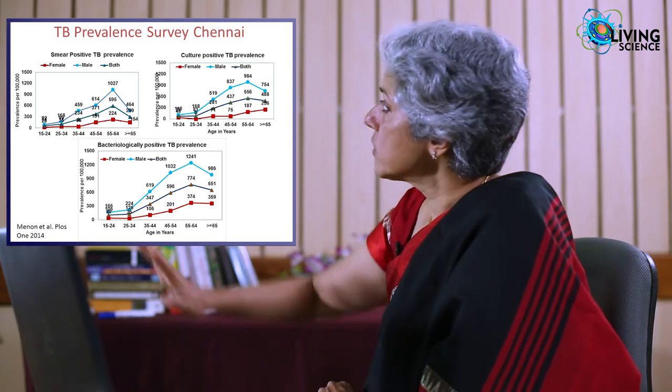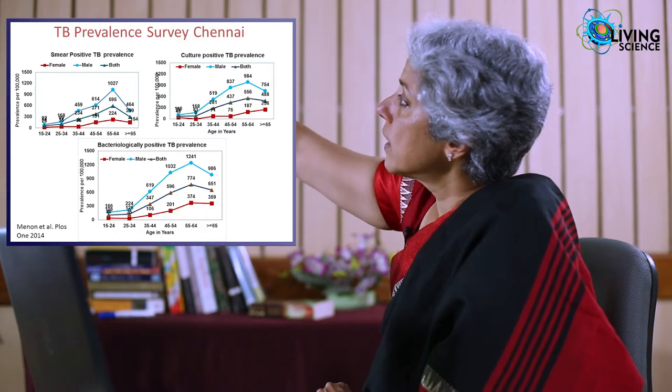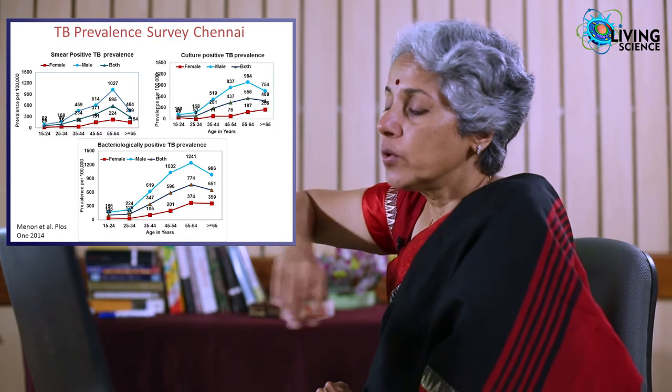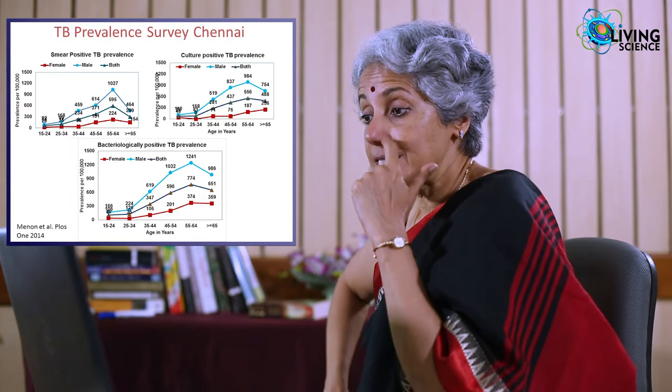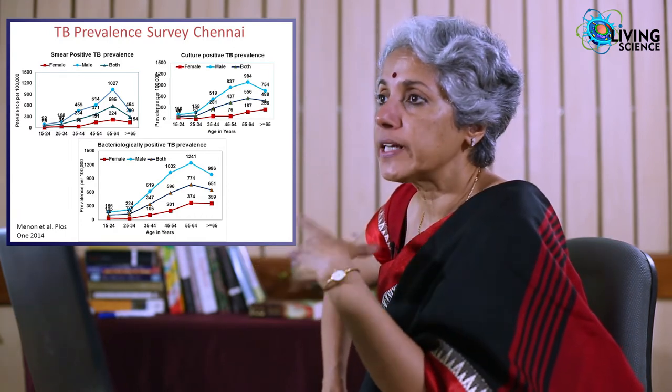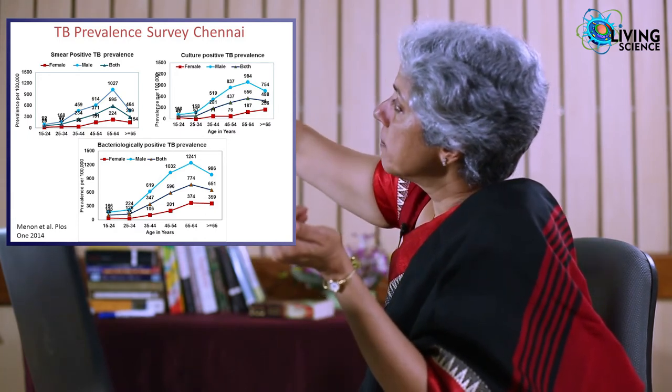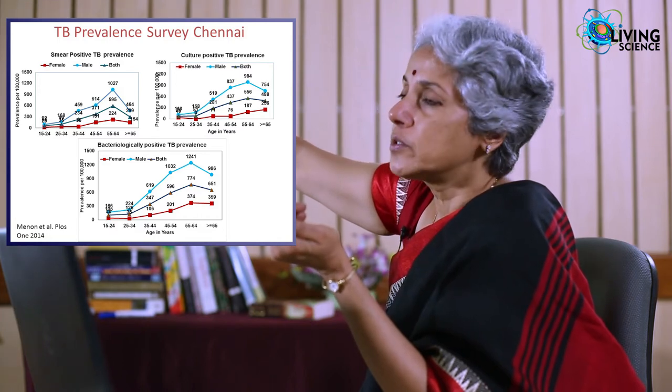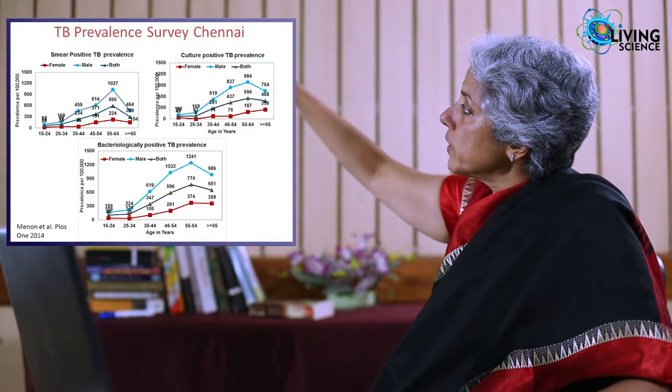In a TB prevalence survey done in Chennai in about 2012, we took the culture-positive TB graph from a community-based survey — screening for symptoms, doing chest X-rays, getting sputum cultures. The blue line is men, the red line is women. There is a big difference between men and women in TB prevalence that we do not fully understand. The peak is between 45 and 60 years of age, reaching almost 984 per 100,000 — about 1 percent of adult men in Chennai had culture-positive TB.